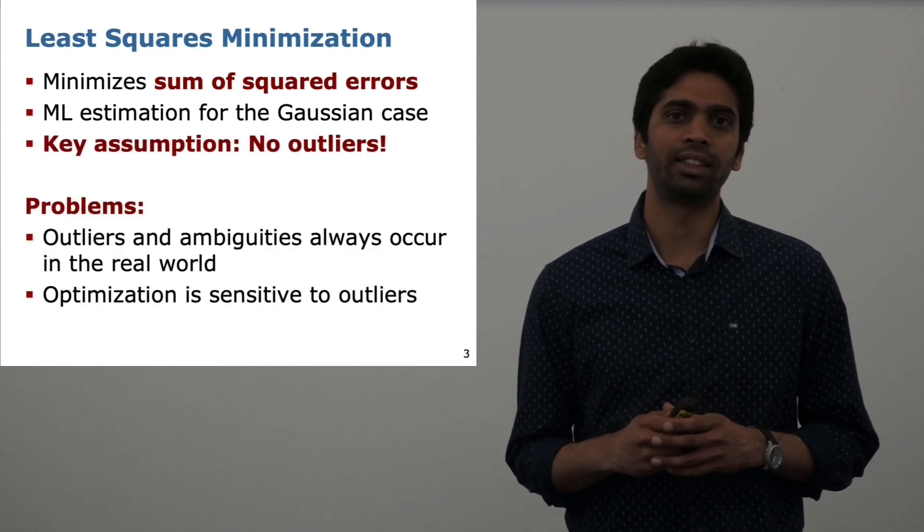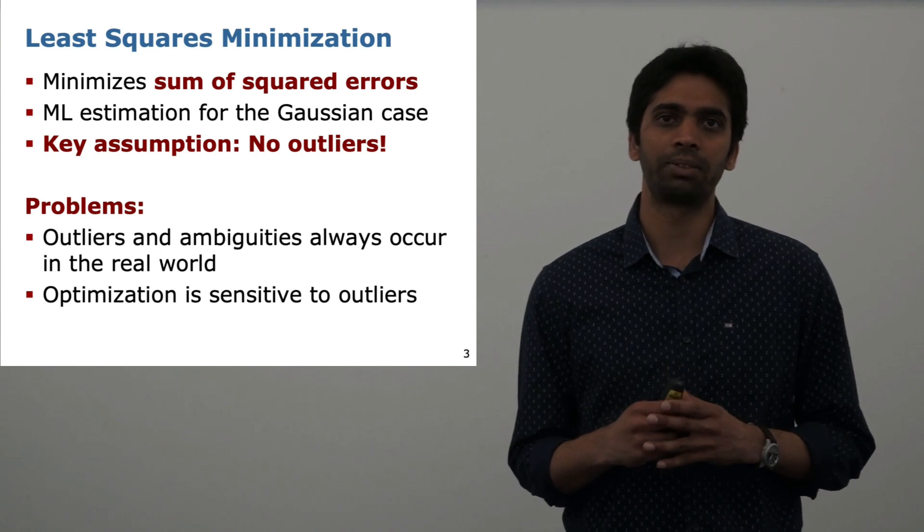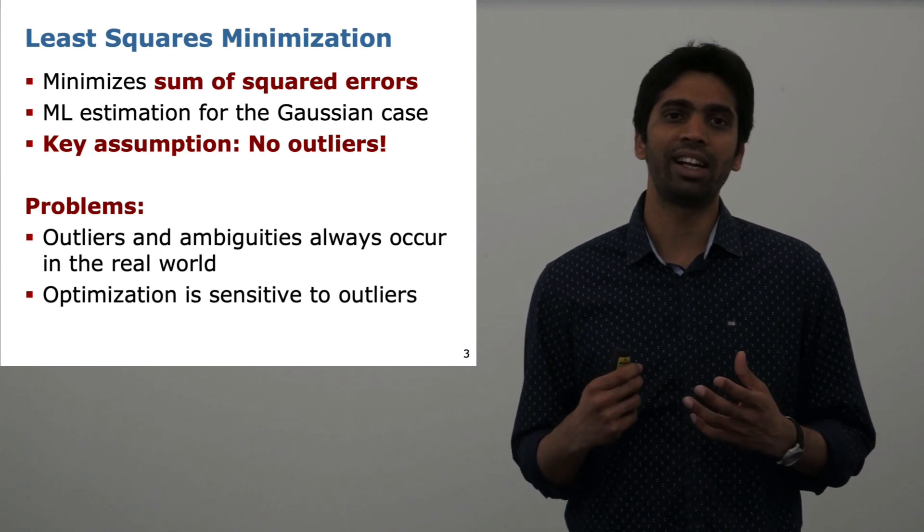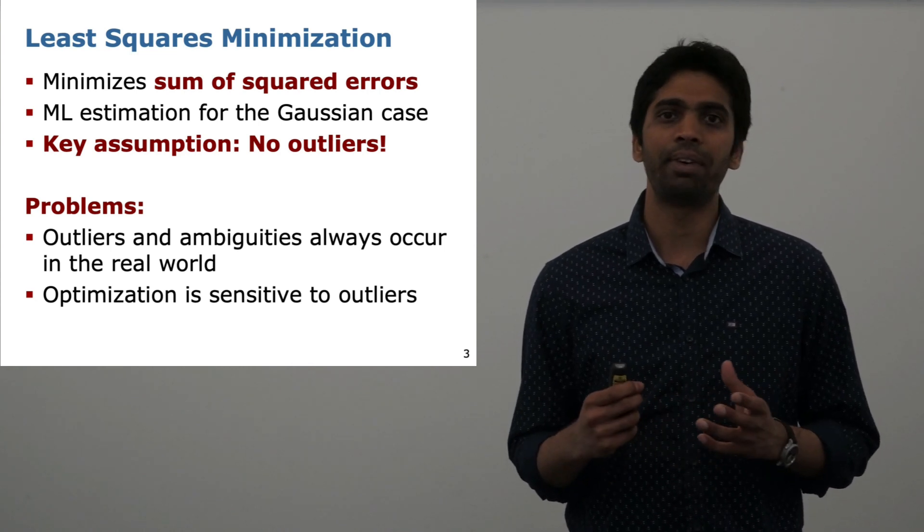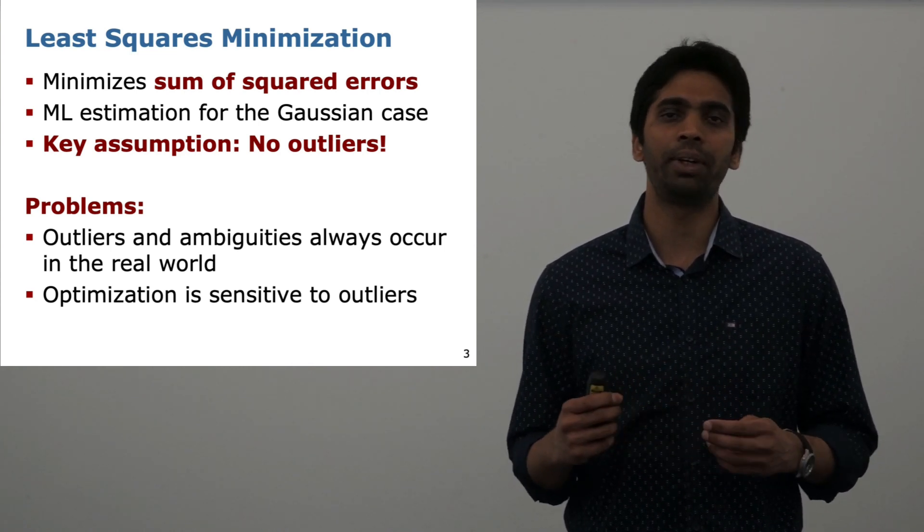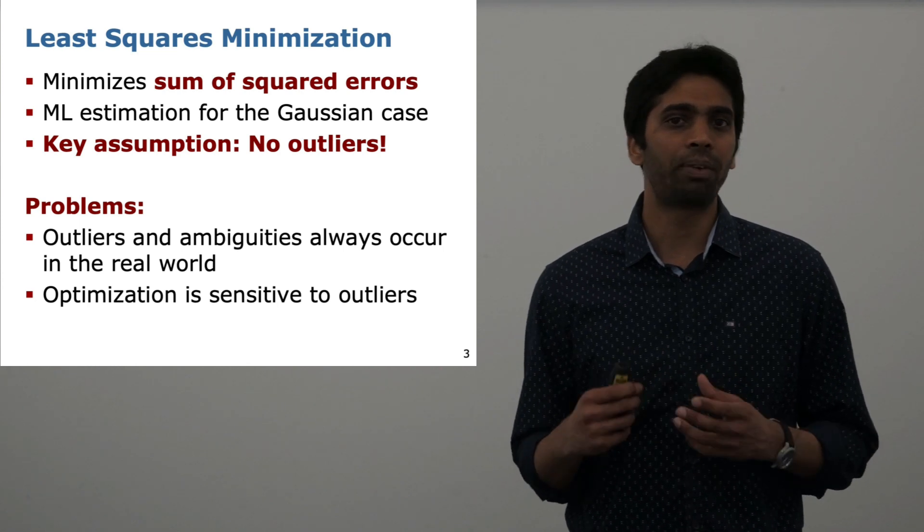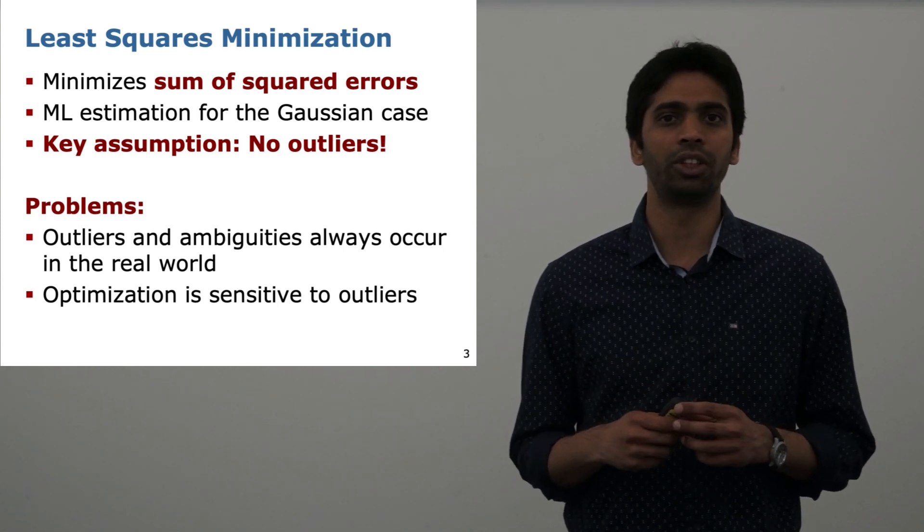However, if there are outliers in the data, there is no guarantee of the maximum likelihood solution. In real data, outliers and ambiguities always occur. This can be due to the fact that two places look alike or many other sources, and the optimization is usually quite sensitive to these outliers.